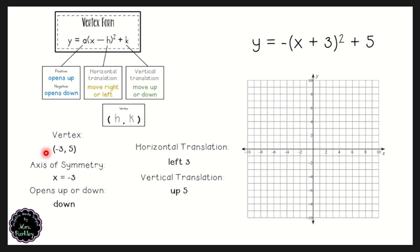To sketch this parabola, start at the vertex at (-3, 5). Since it opens down, instead of going up we use the odd-numbered pattern going downward: left one and down one, mirror that to the right one and down one. Then left one and down three, mirror that. Then left one and down five, mirror that. The next would be left one and down seven, but we go ahead and sketch the parabola from these points.